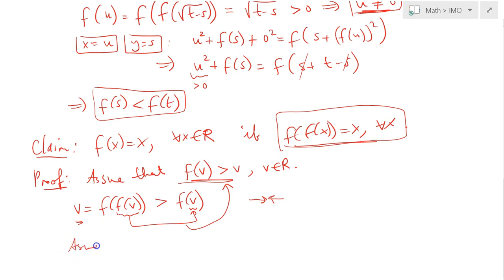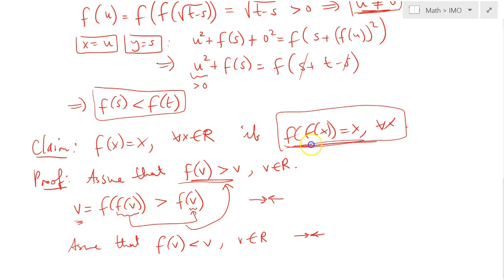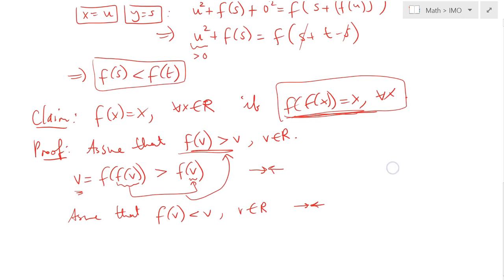In a similar way, one can assume that F of V is strictly less than V for a certain V in R, again arriving at a contradiction due to this same property. Therefore, this implies that F of x equals x is the only solution to the functional equation given in the problem.